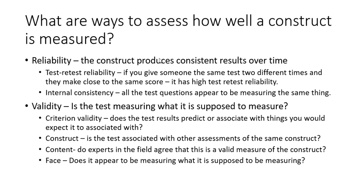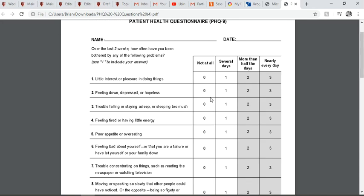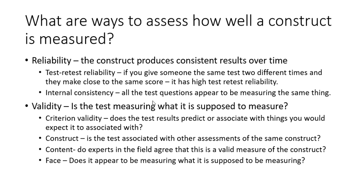Now let's talk about reliability. Going back to the PHQ-9 — assessing reliability means that every time you give the PHQ-9, you get around the same score. If you gave the same person the PHQ-9 two different times three weeks apart, they would probably score about the same. A better example: intelligence is supposed to be stable over time, so if you gave someone an intelligence test one week and it said they had a genius IQ, then the next week it said they were intellectually disabled, that's not a very reliable test. If you use an unreliable test, your study is essentially done.